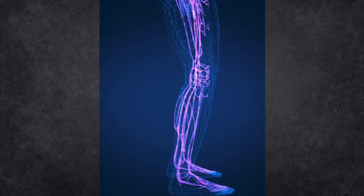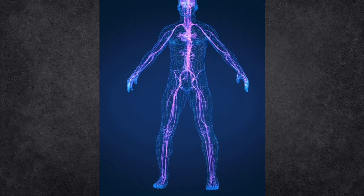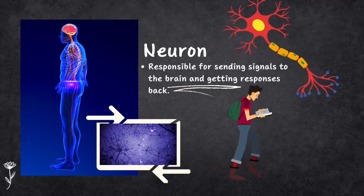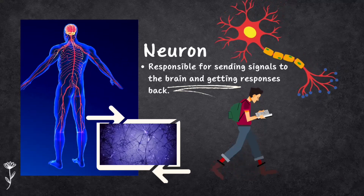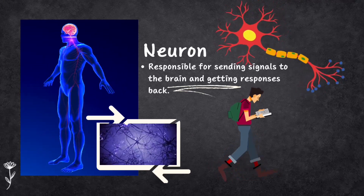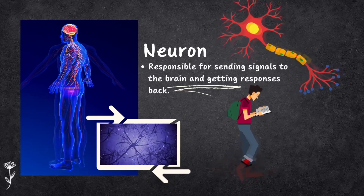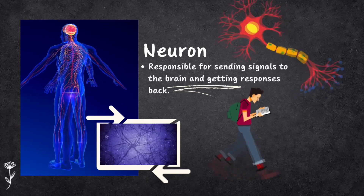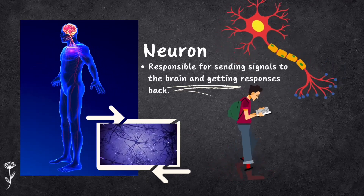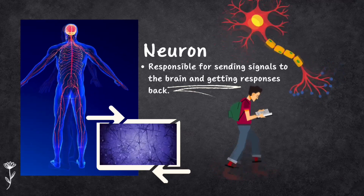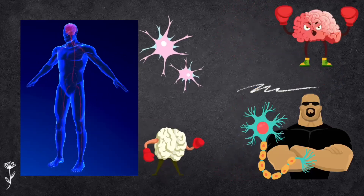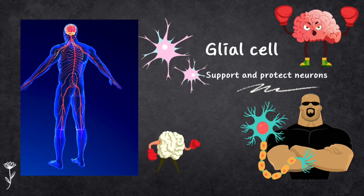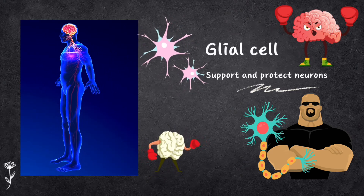Neurons play a crucial role in making information travel throughout our body. In the nervous system, there are two main types of cells: neurons and glial cells. Neurons are the superstars — they send and receive information, kind of like messengers. They are responsible for sending signals to our brain and getting responses back, helping us see, move, feel emotions, remember and communicate by transmitting electrical signals. Glial cells, on the other hand, are like the bodyguards of our neurons, protecting and supporting them. These cells work together as a team, allowing us to experience and interact with the world.